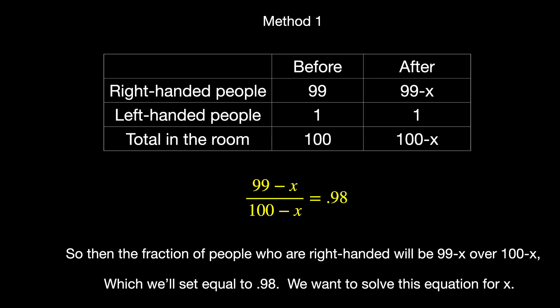So then the fraction of people who are right-handed will be 99 minus x over 100 minus x, which we'll then set equal to 0.98.